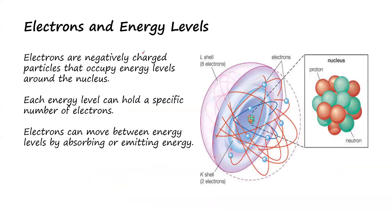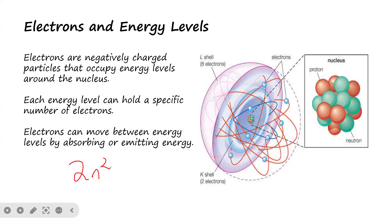So electrons and energy levels: electrons are negatively charged particles that occupy energy levels around the nucleus. The electrons are negatively charged, found on the shell of the atom. Each energy level can hold a specific number of electrons — for example, we have the first energy level, second energy level, and third energy level. By calculation, we can actually calculate the number of electrons that can be accommodated by each shell or orbital. To do that, we use the formula 2n².